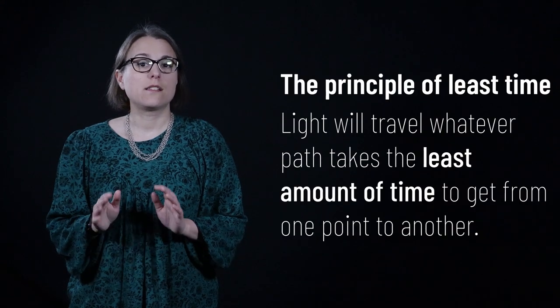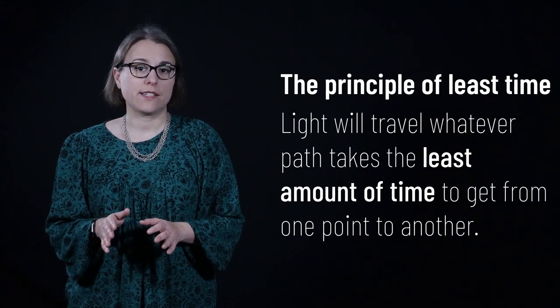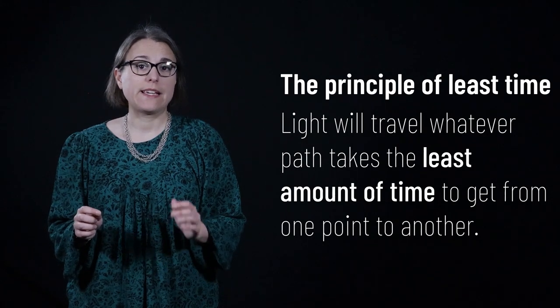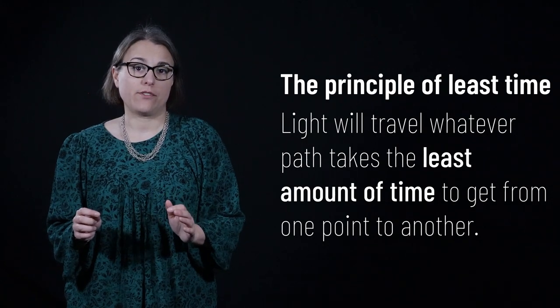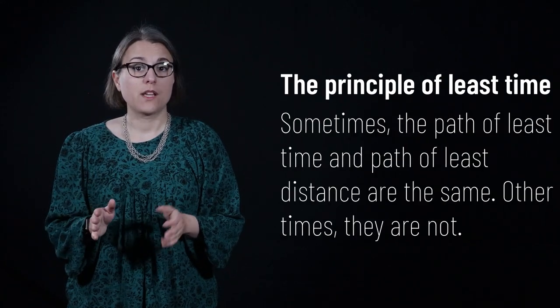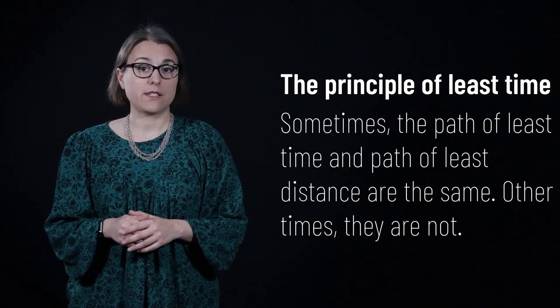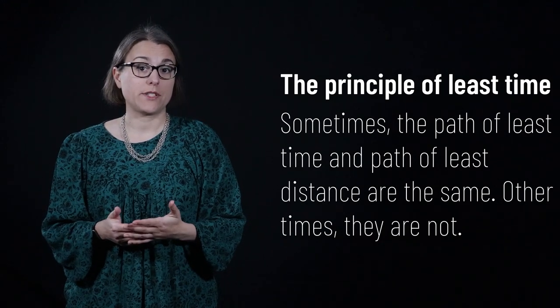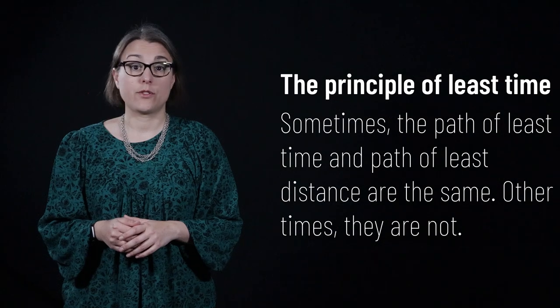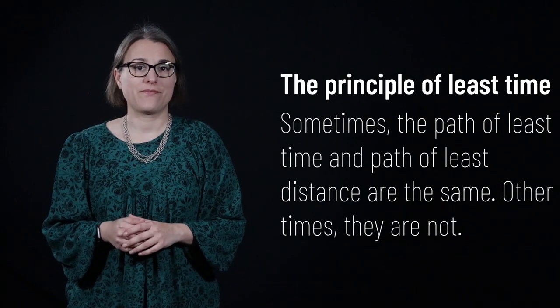Light travels from one point to another using the principle of least time. That is to say, light does not necessarily take the shortest distance between two points — it will travel whatever path takes the least amount of time. Sometimes the path of least distance and the path of least time are the same; other times, however, those two paths are not the same.